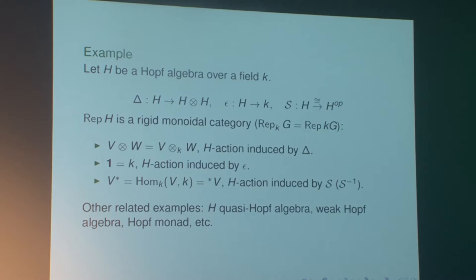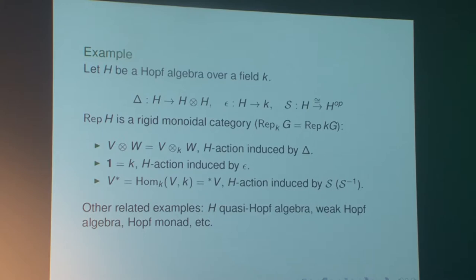This example can be generalized in several directions — letting H be a quasi-Hopf algebra in the sense introduced by Drinfeld, or a weak Hopf algebra, or more generally a Hopf monad as introduced by Bruguières, Virelizier, and others.